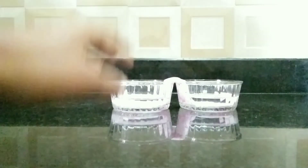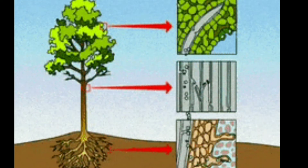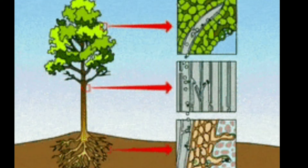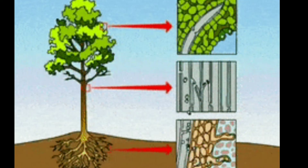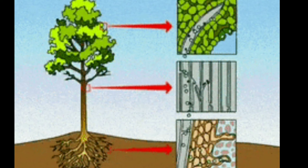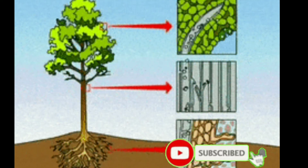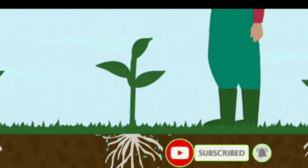This is called capillary action. Capillary action is the movement of a liquid along the surface of a solid, caused by the attraction of molecules of the liquid to the molecules of the solid. Now, do you understand how the roots of plants bring water up?